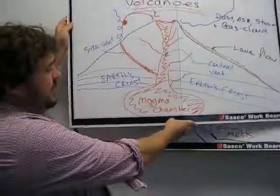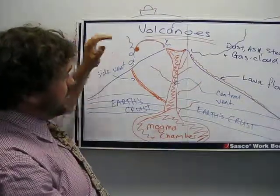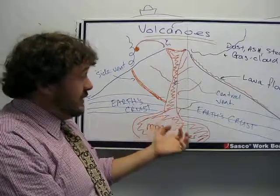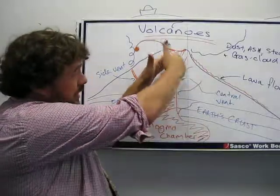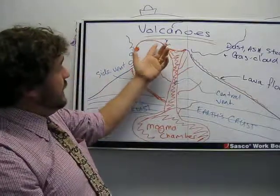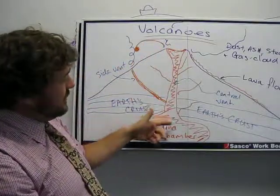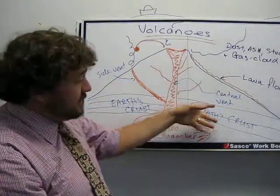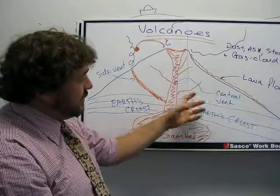Now if we want to look at the anatomy, we'll start off with the magma chamber. Sometimes it's like a drinking straw, sometimes it's more of a wide vent that goes up and hits the top. Out here we get what are called volcanic bombs. This is the central chamber or central vent. This is the Earth's crust, and you can see how it's just coming underneath the Earth's crust and pushing through there.